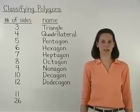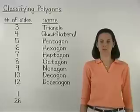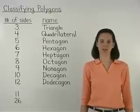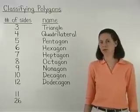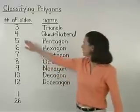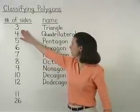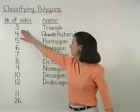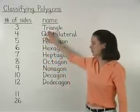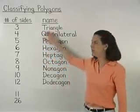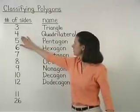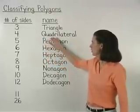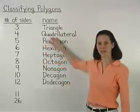Polygons are classified based on the number of sides that they have. For example, if a polygon has three sides, it's called a triangle. If it has four sides, it's called a quadrilateral.